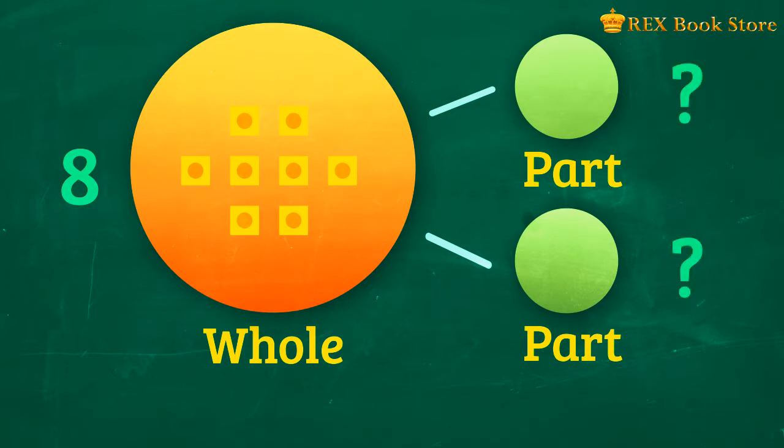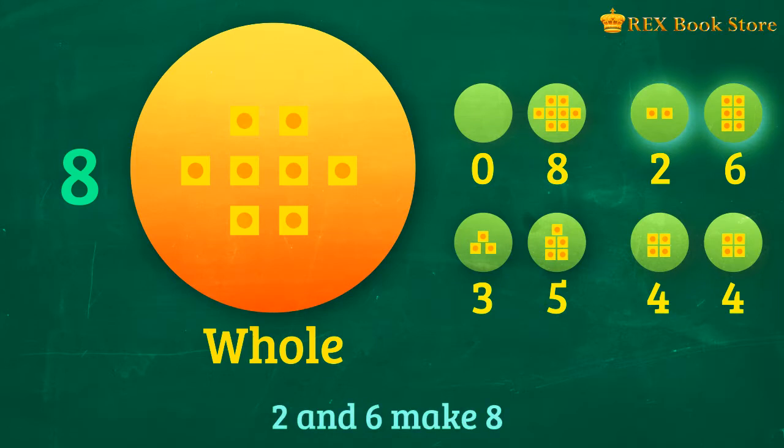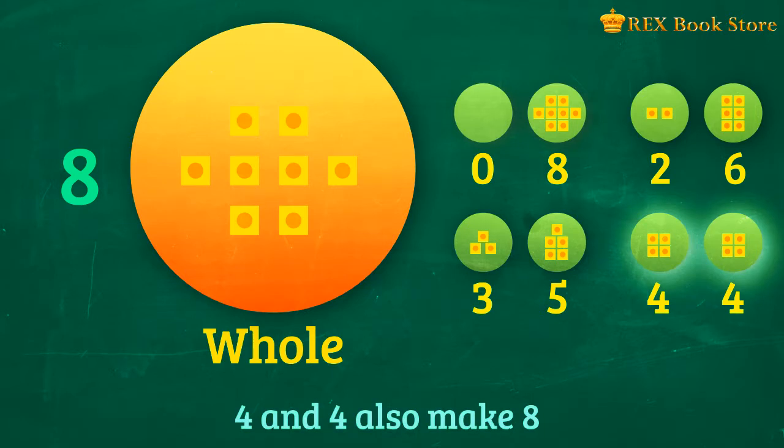If you answered any of these pairs, then you're correct. 0 and 8 make 8. 2 and 6 make 8. 3 and 5 make 8. 4 and 4 also make 8.